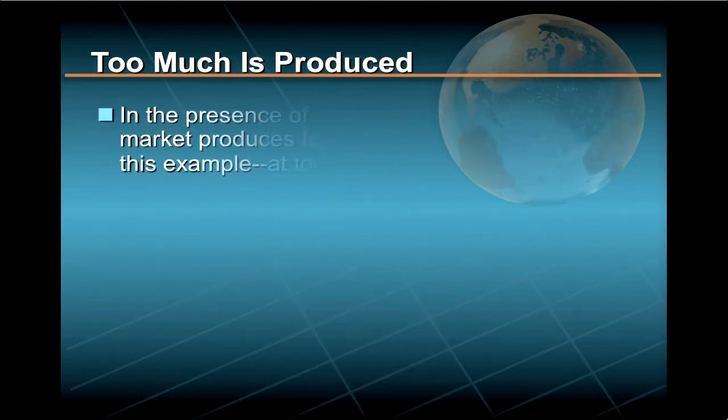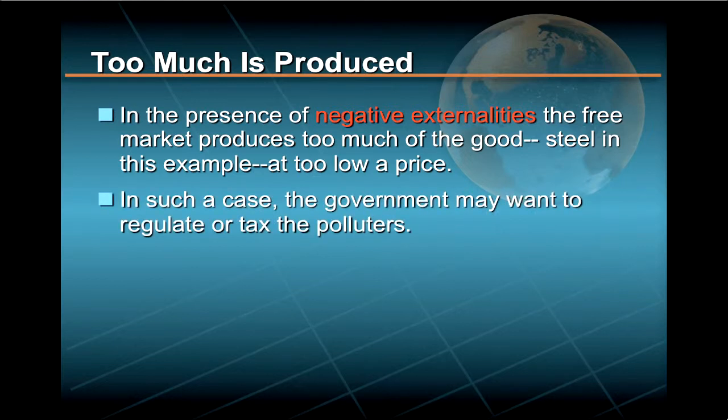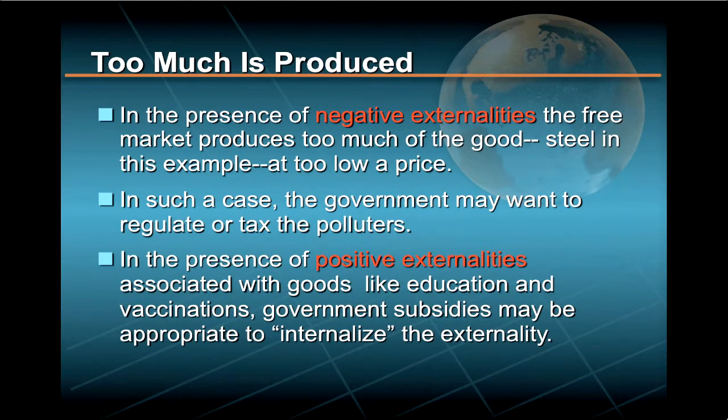We'll learn that in the presence of negative externalities, like pollution and congestion, the free market produces too much of the good — steel in this example — at too low a price. In such a case, the government may want to regulate or tax the polluters, while in the presence of positive externalities associated with goods like education and vaccinations, government subsidies may be appropriate to internalize the externality.